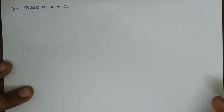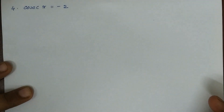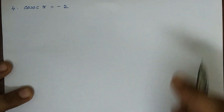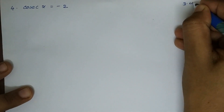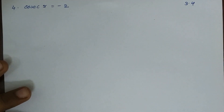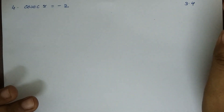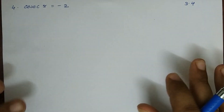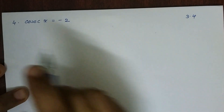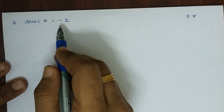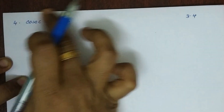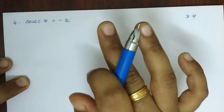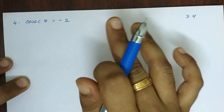Hi students. Plus one mathematics, the third chapter is trigonometric functions. We will learn chapter 3.4, the fourth problem: cosec x is equal to minus 2. We will find the principle solution and general solution.